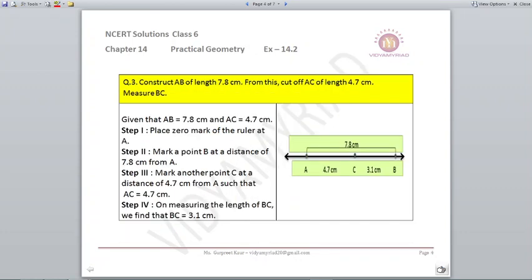Question number three: construct AB of length 7.8 centimeters. From this, cut off AC of length 4.7 centimeters, measure BC. Now what is given to us? We are given AB 7.8, so what are we going to do? We will draw a line AB with 7.8 centimeters.